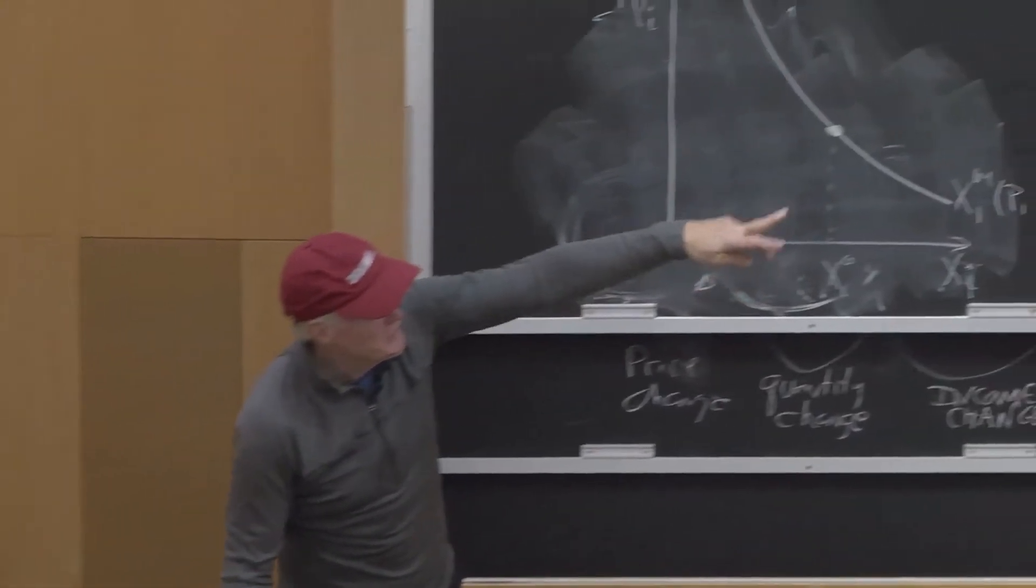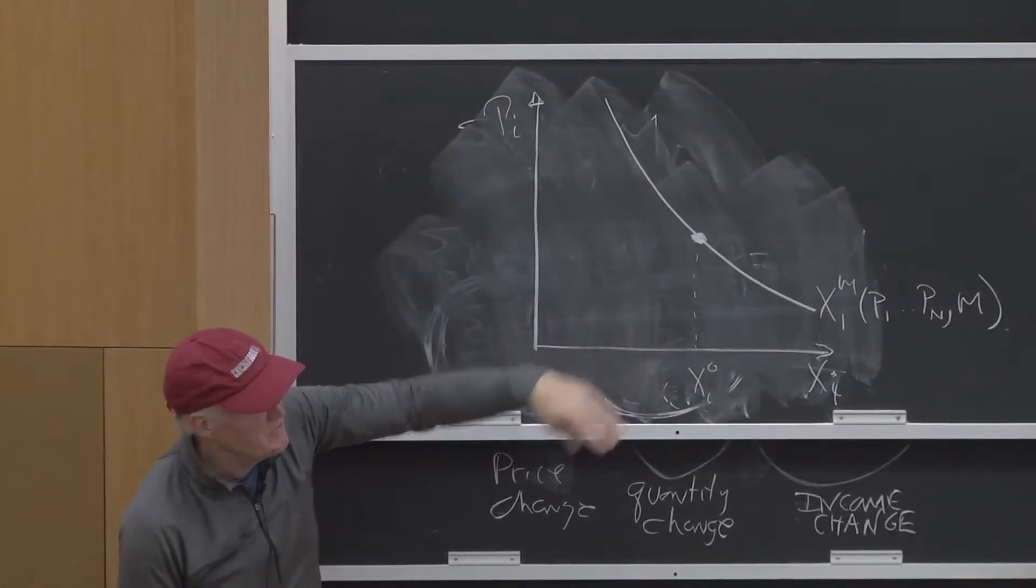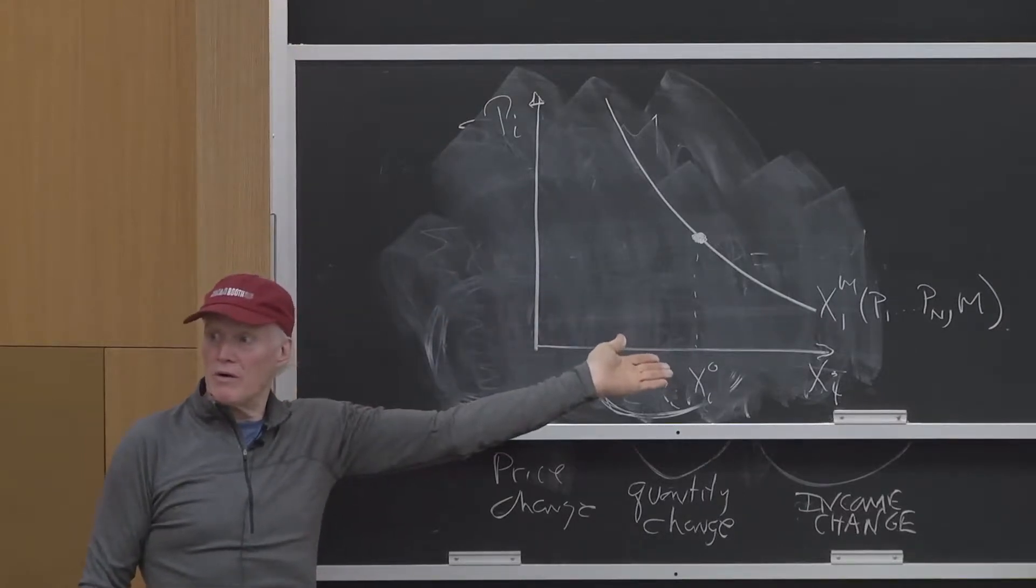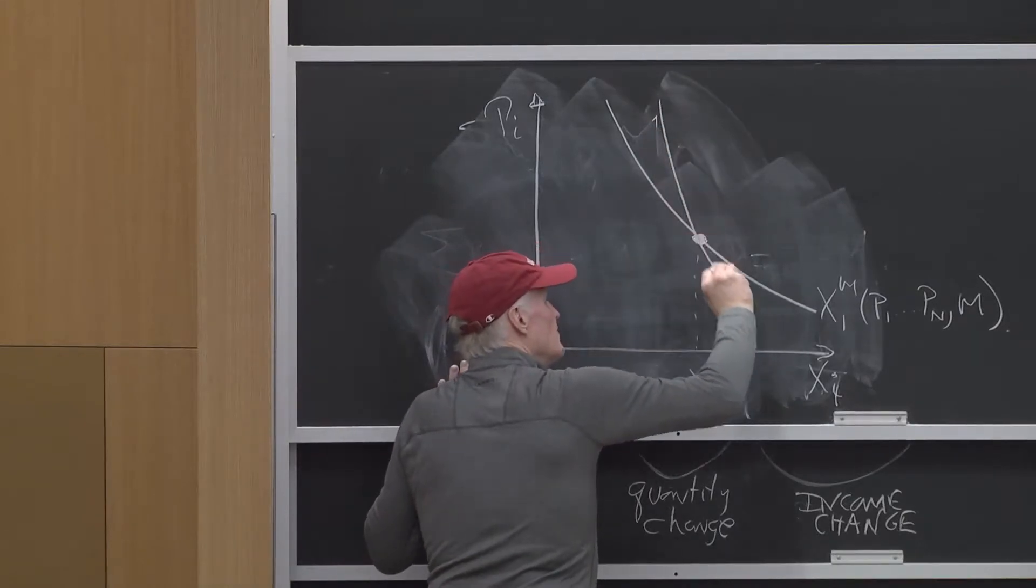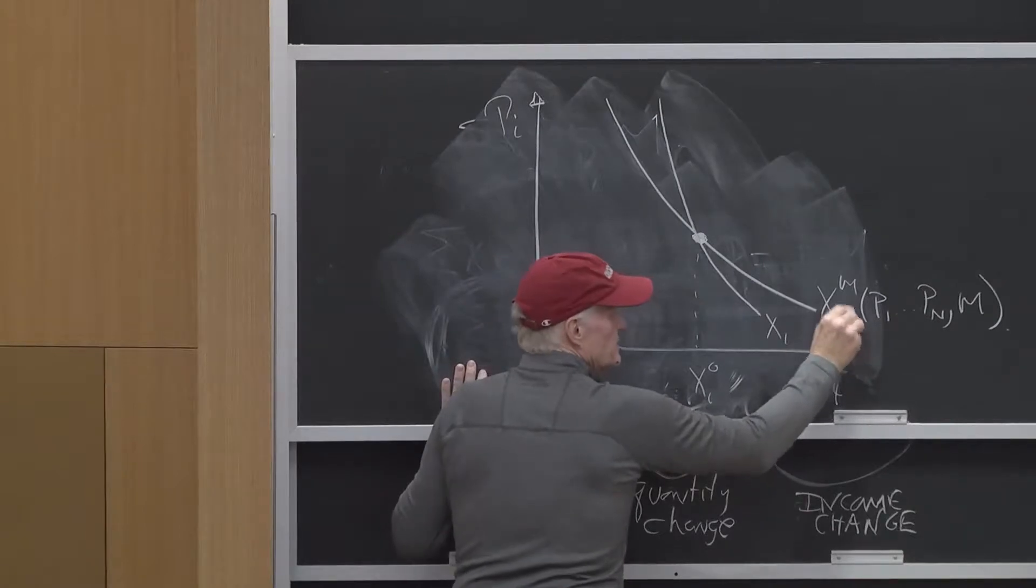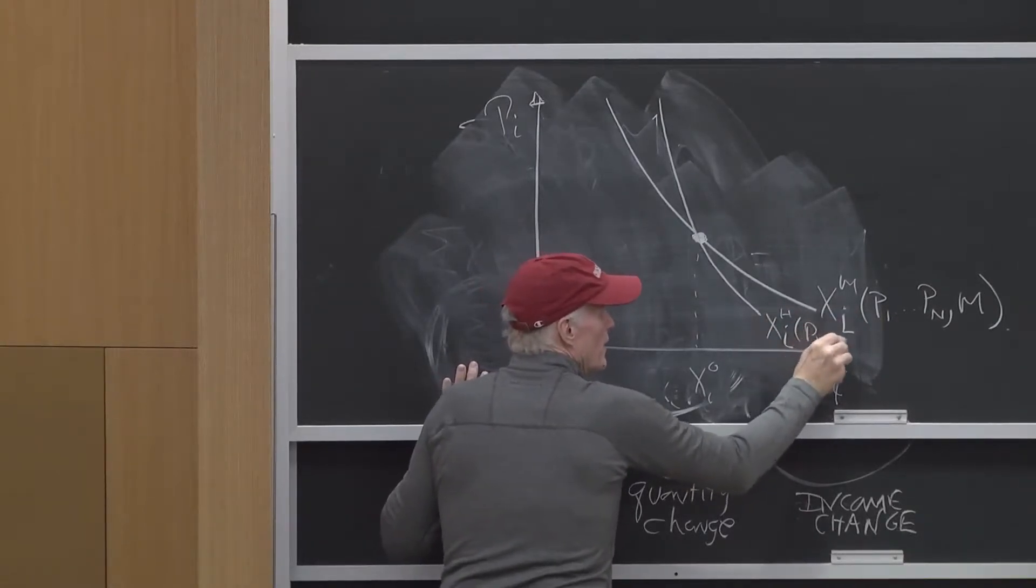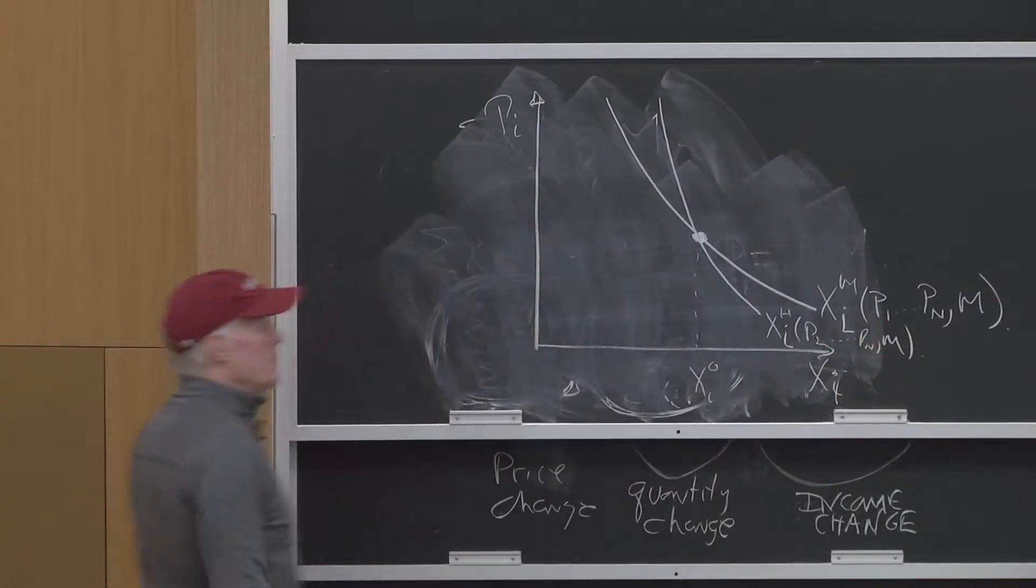Because that second term isn't going to be there. That second term, which is the income effect, is making this curve quantity respond more. So the Hicksian demand curve is going to look steeper: X_I^H of P1 up to PN and U.